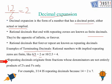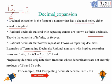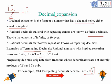Repeating decimals originate from fractions whose denominators are not entirely a product of 2s and 5s only. For example, 3 over 14 is a repeating decimal because 14 can be factorized as 2 times 7. The denominator is not entirely a product of 2s and 5s only because there is a 7, so this is a repeating decimal.